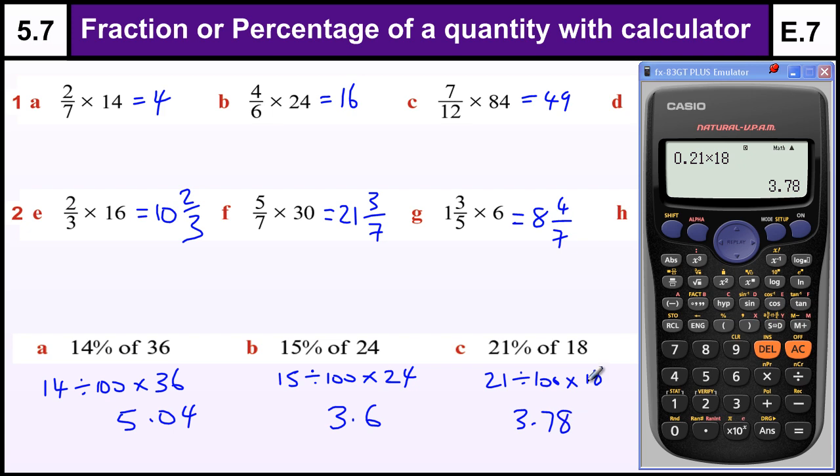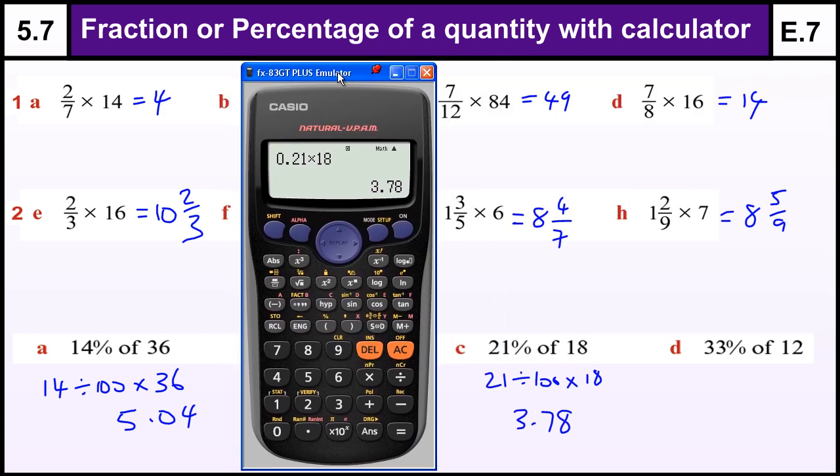3.78. And the last one, which we can't see: 33 divided by 100 times 12. Or 0.33 times 12. And there we have it.